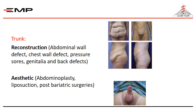When we go to the trunk, it is also divided into reconstruction and aesthetic. Reconstruction includes abdominal wall defects, chest wall defects, pressure sores, genitalia, and back defects. As regards aesthetics: abdominoplasty, liposuction, and post-bariatric surgeries.